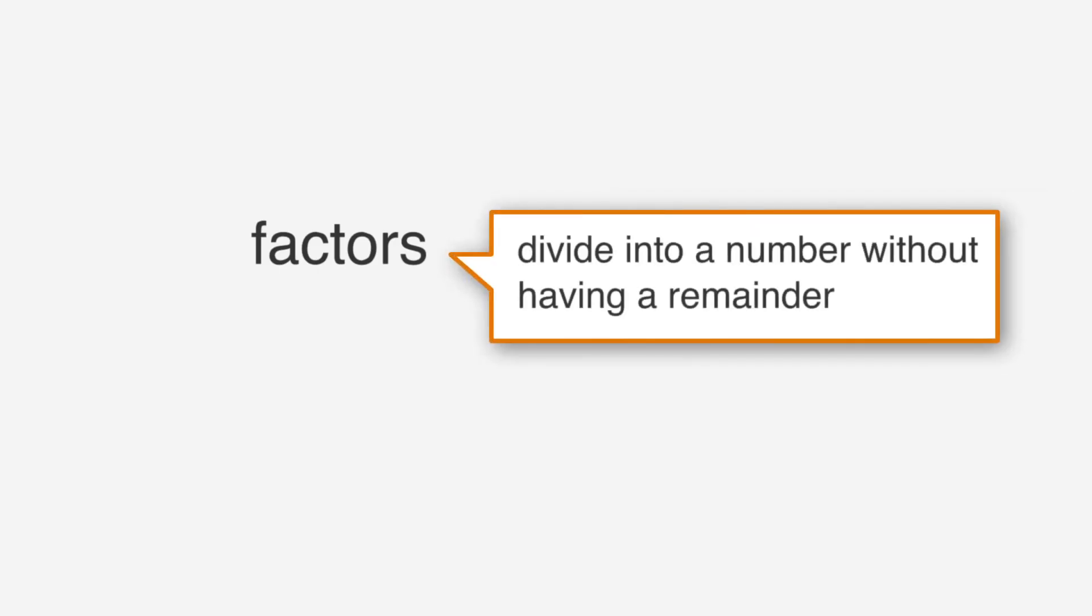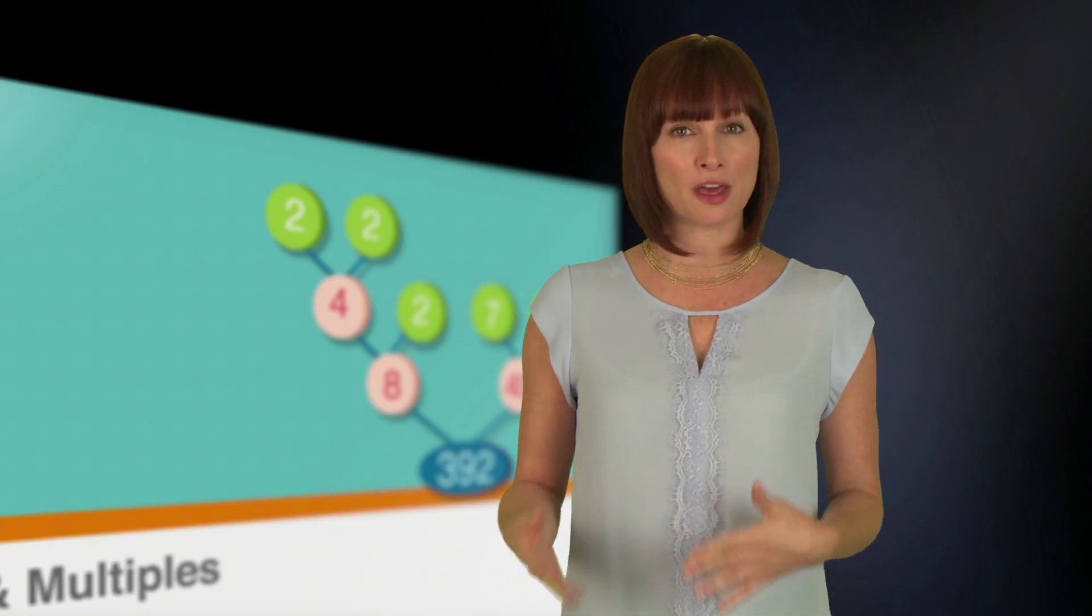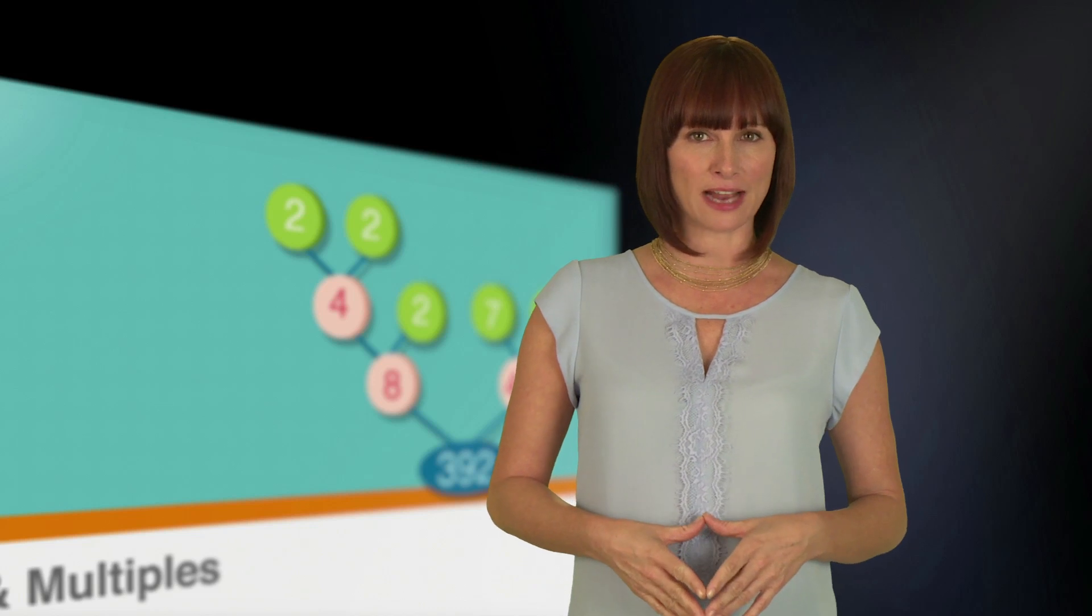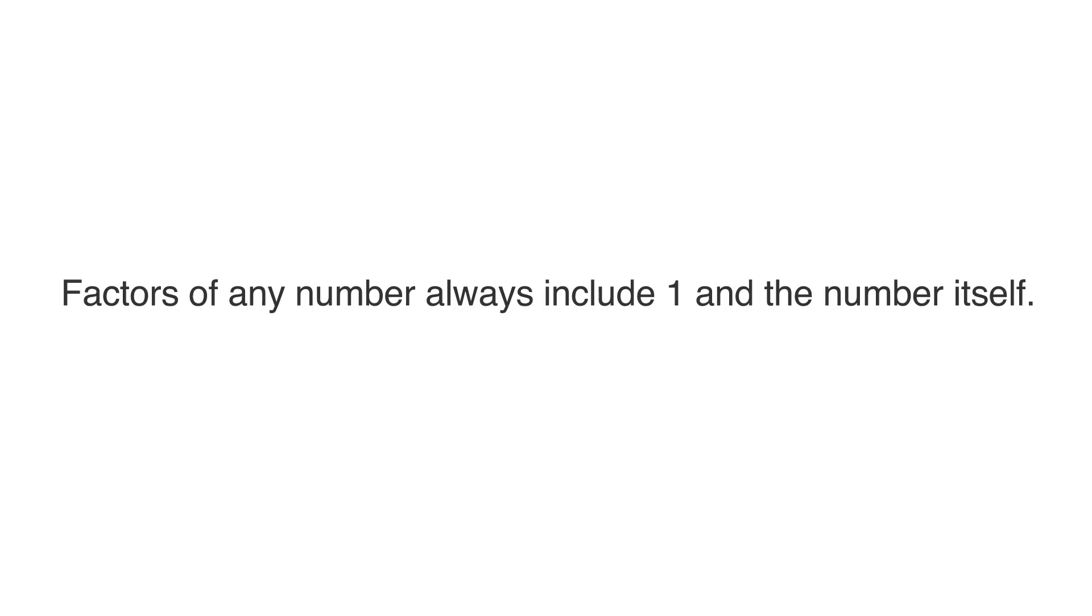Factors are numbers that divide into a number without having a remainder. Basically, the factor of a number divides evenly into another number. Another phrase for factor is divisible by. Factors of a number always include 1 and the number itself.